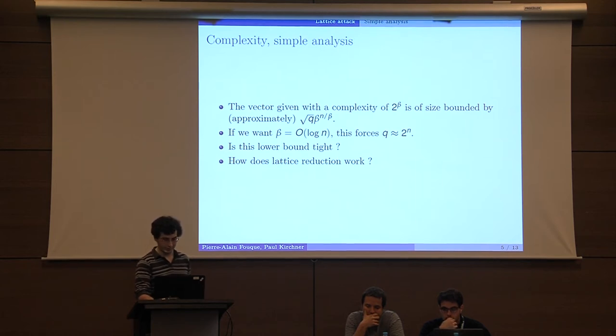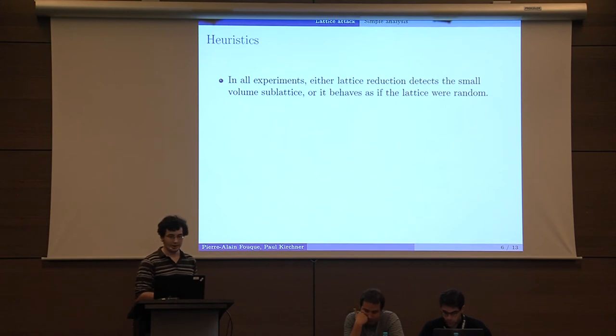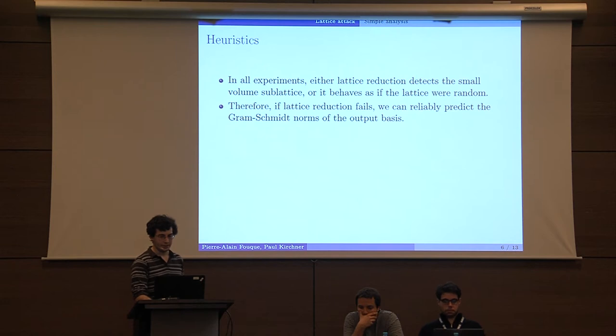In order to answer this question, we have the following: how does lattice reduction work? In all experiments, either lattice reduction detects a small volume sublattice which is hidden, or it behaves as if the lattice were random. Therefore, if lattice reduction fails, you can reliably predict all the Gram-Schmidt norms of the output basis.